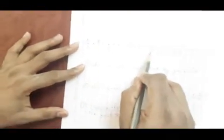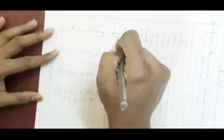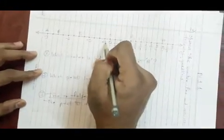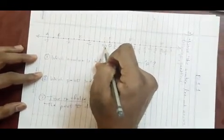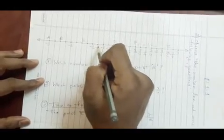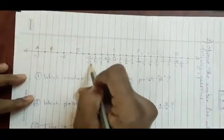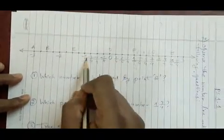Now same way we go to the left hand side. We started with 1 upon 4, here we start with minus 1 upon 4. So minus 1 upon 4, then we have minus 2 upon 4, then we have minus 3 upon 4, next we have minus 4 upon 4. What is minus 4 upon 4? Minus 1.